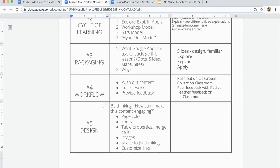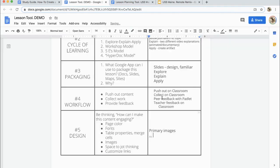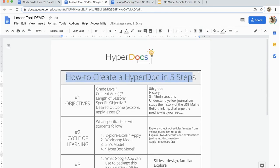Next, step five. What design choices will you be making? What kind of page color, fonts, images? In this case, I really want to be sure I use primary images, and then we'll kind of go from there.